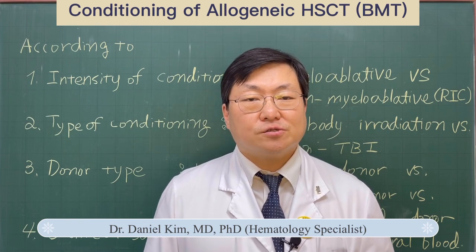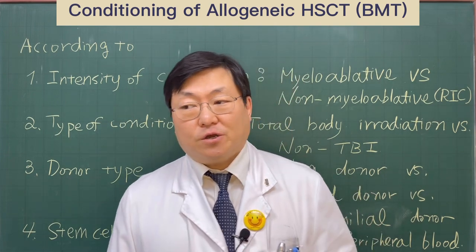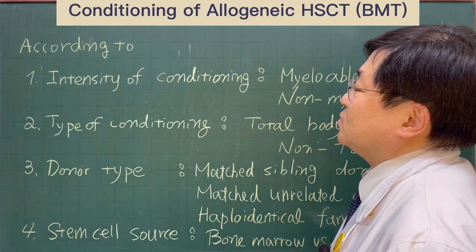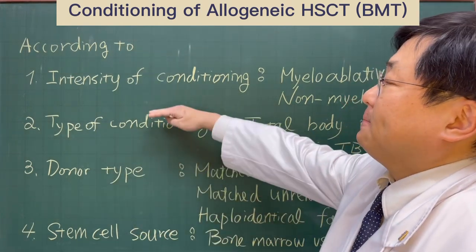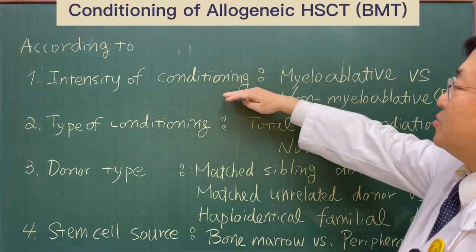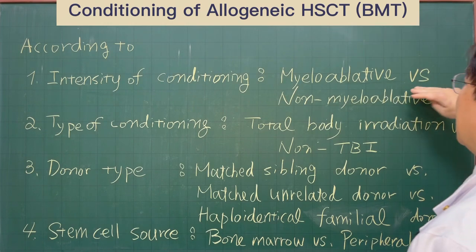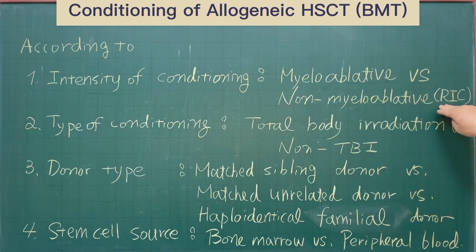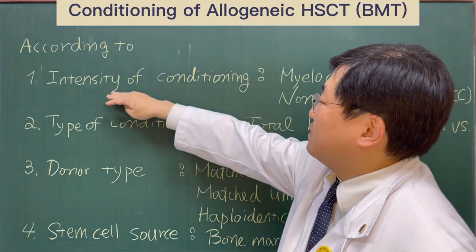It's very important to avoid an immune response to reject the allogeneic stem cells from the donor. We can classify the conditioning regimen according to four types of criteria. First, we can classify the conditioning regimen into two important concepts: myeloablative versus non-myeloablative, in other words, reduced intensity conditioning according to the intensity of conditioning.